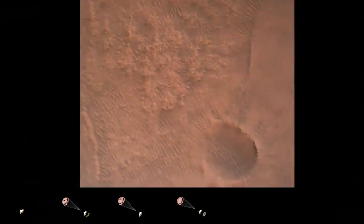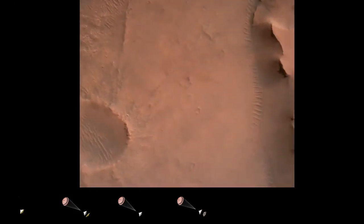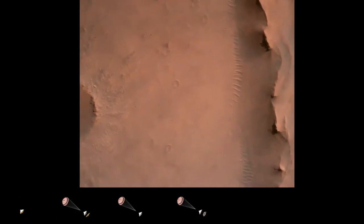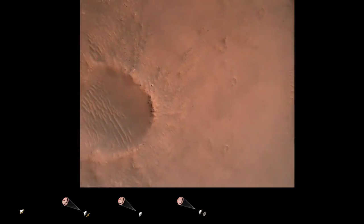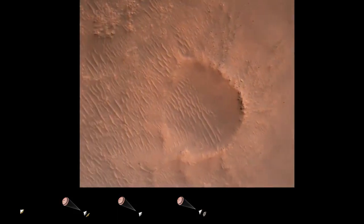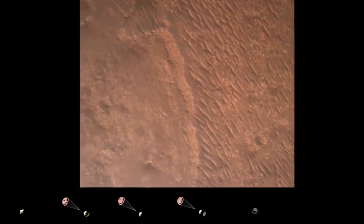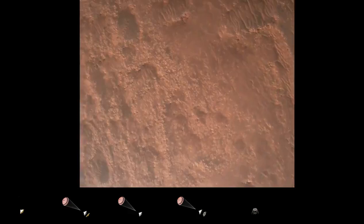Back shell separated. Current velocity is 83 meters per second at about 2.6 kilometers from the surface of Mars. We have confirmation that the back shell has separated. We are currently performing the divert maneuver. Current velocity is about 75 meters per second at an altitude of about a kilometer off the surface of Mars.